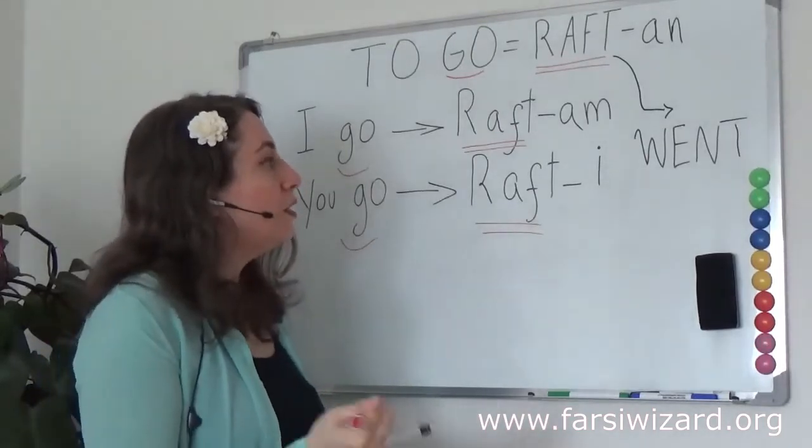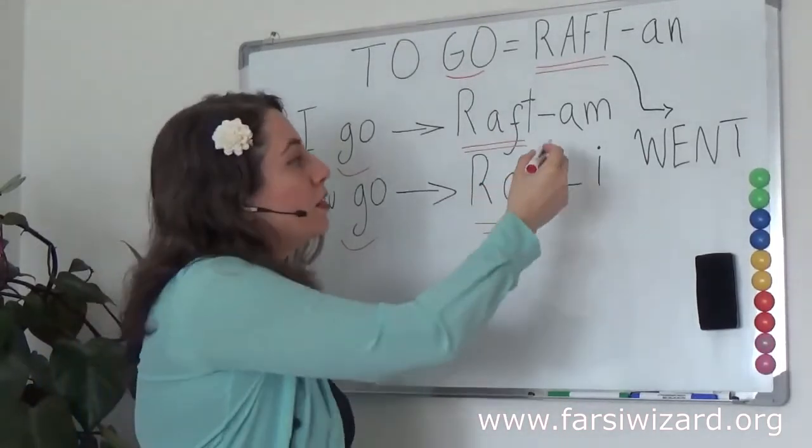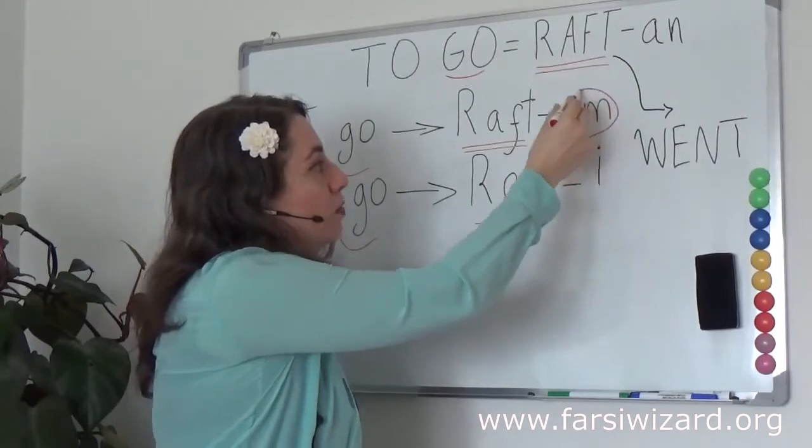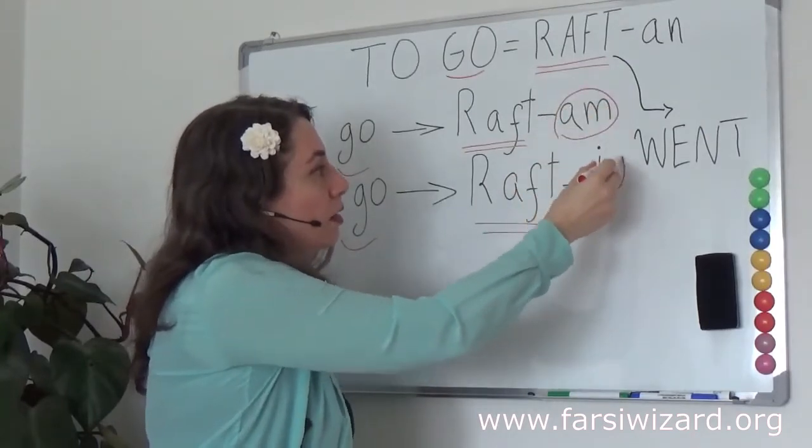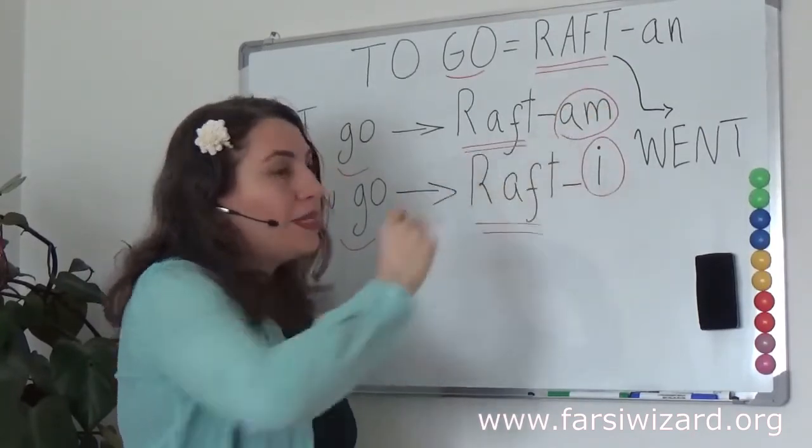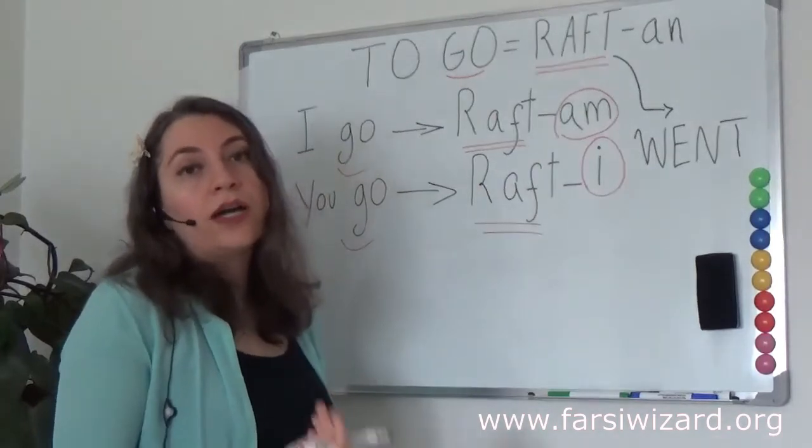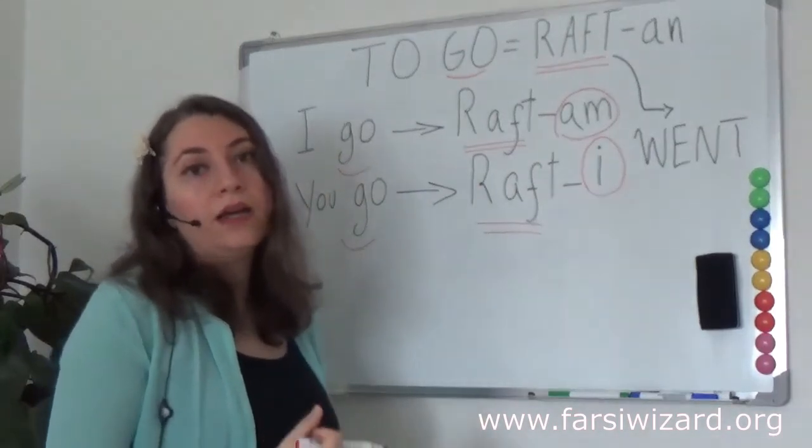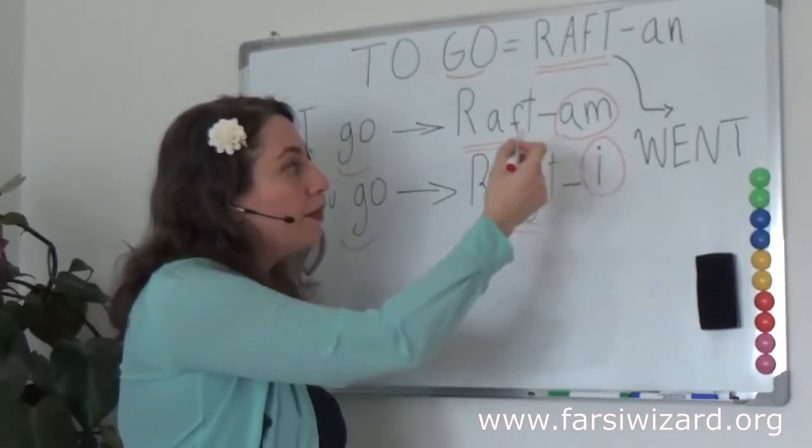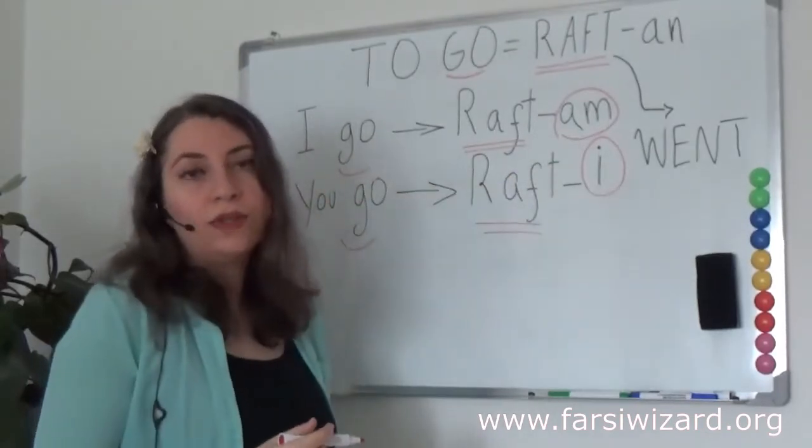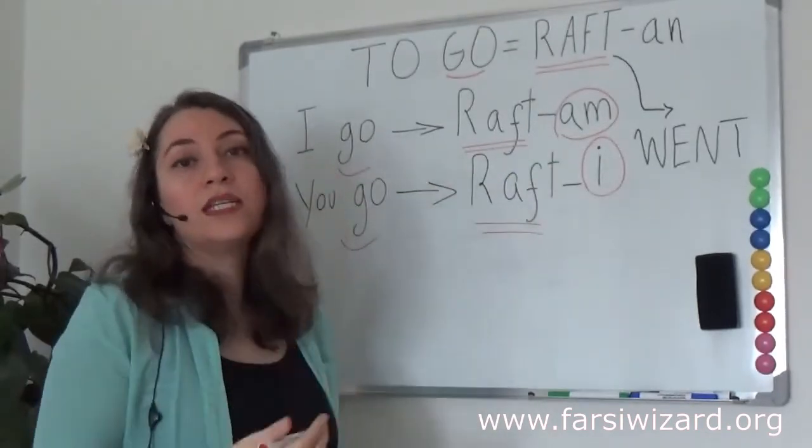You remember that in Farsi the way we work with verbs is we conjugate, which means the ending will change based on the person. 'Am' is added to a verb when we are talking about I. I went 'raftam' and 'e' is added to a verb when we're talking about you singular informal.